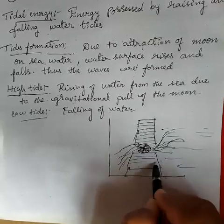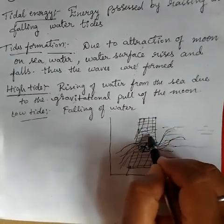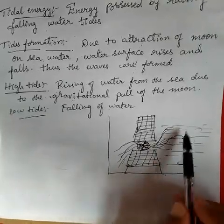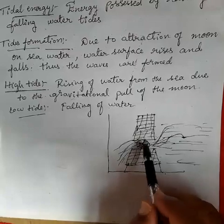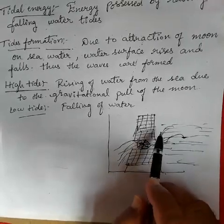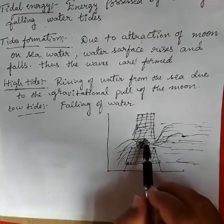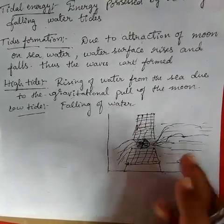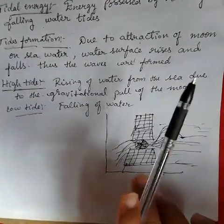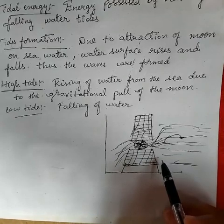The barrier is constructed using bricks or stone. As the high tide comes, it moves through the narrow pipe where a turbine is fitted. The turbine rotates fast, and electricity is produced by converting mechanical energy into electrical energy by the help of the generator fitted to the turbine. This is how tidal energy helps in the formation of electrical energy.